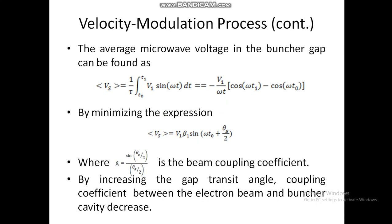To calculate the average microwave voltage in the buncher gap: the average voltage = (1/T) × ∫[t₀ to t₁] V₁ sin(ωt) dt. Integrating sin(ωt) gives −cos(ωt)/ω. Substituting the limits gives V₁/ωτ × [cos(ωt₁) − cos(ωt₀)]. Rearranging these terms, Vs = V₁ × β₁ × sin(ω × (t₀ + θg/2)), where θg is the average gap transit angle and β₁ is the beam coupling coefficient, defined as β₁ = sin(θg/2) / (θg/2).